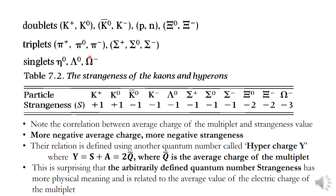The Omega-minus has the most negative average charge and the most negative strangeness value. The Xi family has −1/2 average charge and a comparatively more negative strangeness. This relation is defined using another quantum number called hypercharge, where Y = S + A = 2 times the average charge of the multiplet. It is amazing that the arbitrarily defined quantum number strangeness has deeper physical meaning, since it is related to the average value of electric charge of the multiplet.